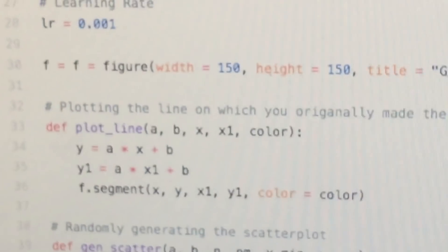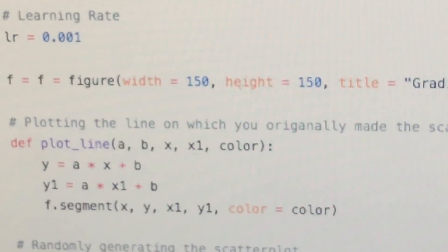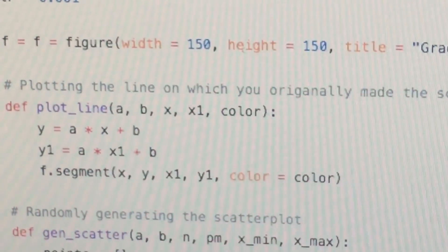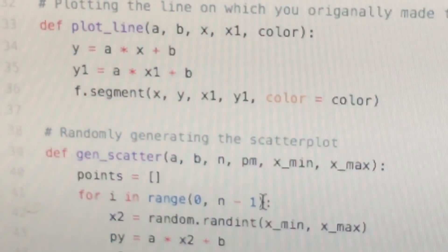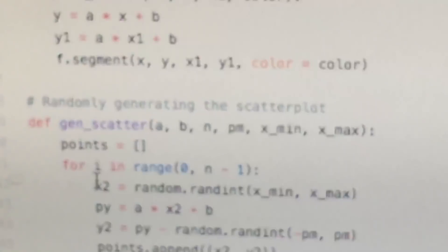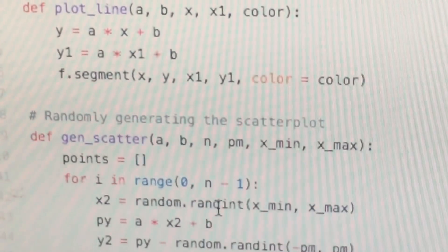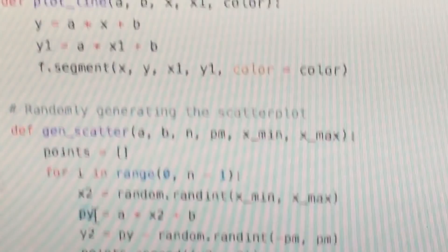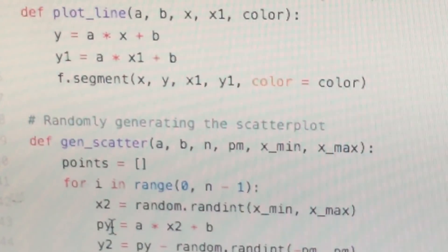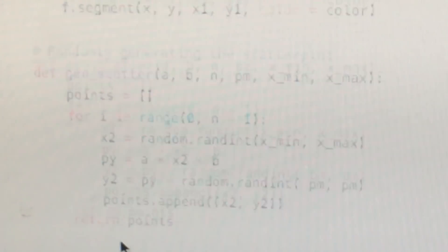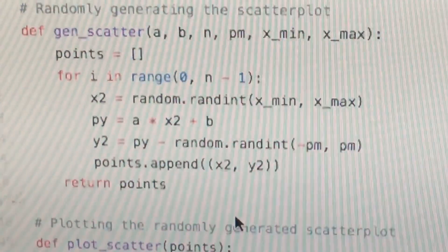This is generating the scatter plot. You have all these variables and it makes points which will be a list of tuples. So this makes sure that it runs exactly how many times n is. And then X2 is random from X_min to X_max, and then you have PY which calculates where the line will be at that point.